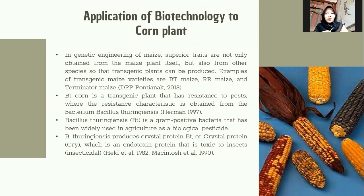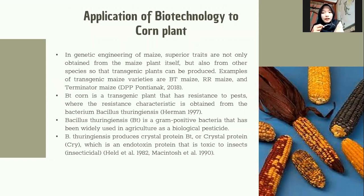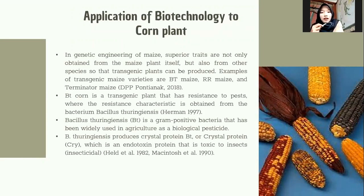Application of biotechnology to corn plants. In genetic engineering of maize, superior traits are not only obtained from the maize plant itself but also from other species, so that transgenic plants can be produced. Examples of transgenic maize varieties are Bt maize, RR maize, and Terminator maize. Bt corn is a transgenic plant that is resistant to pests, where the resistant character is obtained from the bacterium Bacillus thuringiensis.